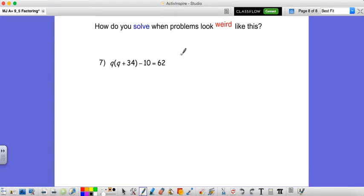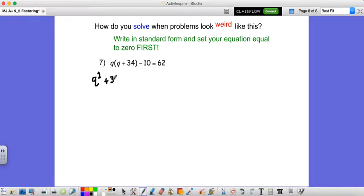Okay, last one, a little more complicated. How could we solve when problems look really weird like this? You think about that in your head. The answer would be first we need to get it in standard form. So we might need to distribute this q. So we'd have q squared plus 34q minus 10 equals 62. Now we're going to want to subtract 62. So q squared plus 34q minus 72 equals 0.